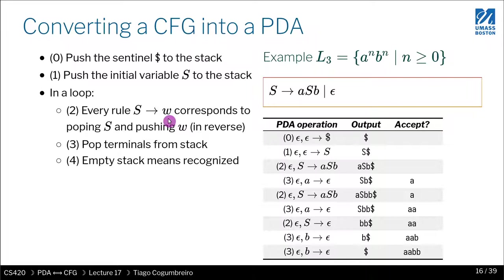If you've taken CS450, the idea is similar to implementing an interpreter for a programming language — you have a loop or recursion where you execute the language step by step. In a functional programming language you're going through a tree. In a context-free grammar, you're doing something similar with a PDA.